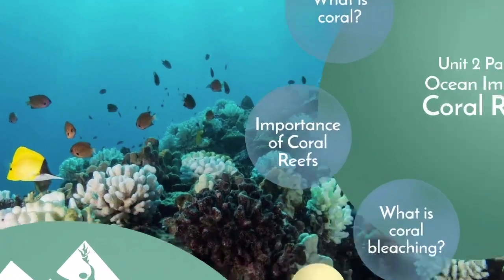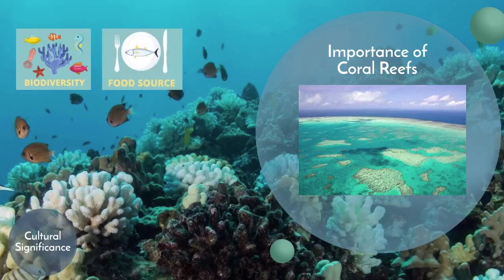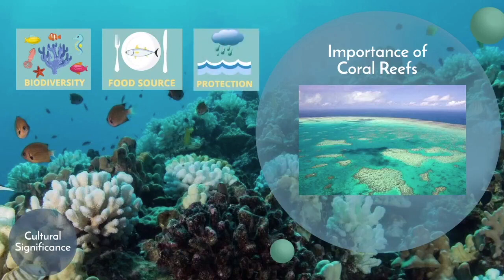How are coral reefs important? First, we have biodiversity. Coral reefs are one of the most diverse ecosystems in the world. They are home to a quarter of the world's marine species, yet coral reefs make up less than 1% of the oceans — that's a lot of animals in a small area. As a food source, an estimated 500 million people that live near the coast rely on seafood as their main source of food. Coral reefs are also natural marine barriers that protect coastal communities from high-impact waves and storms.